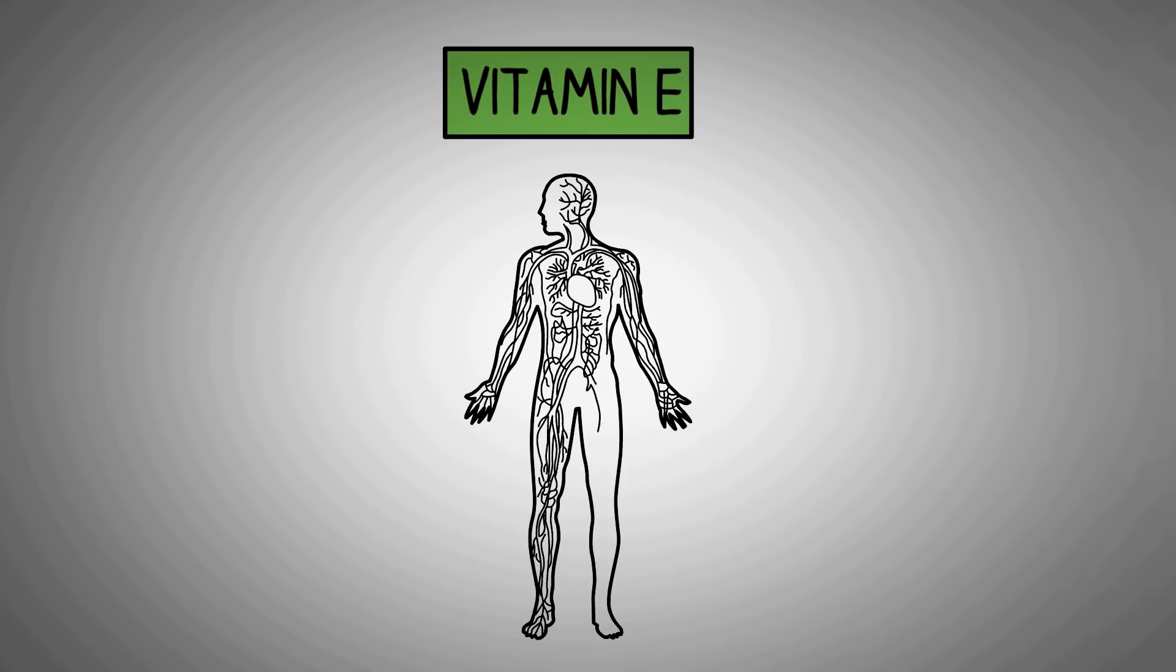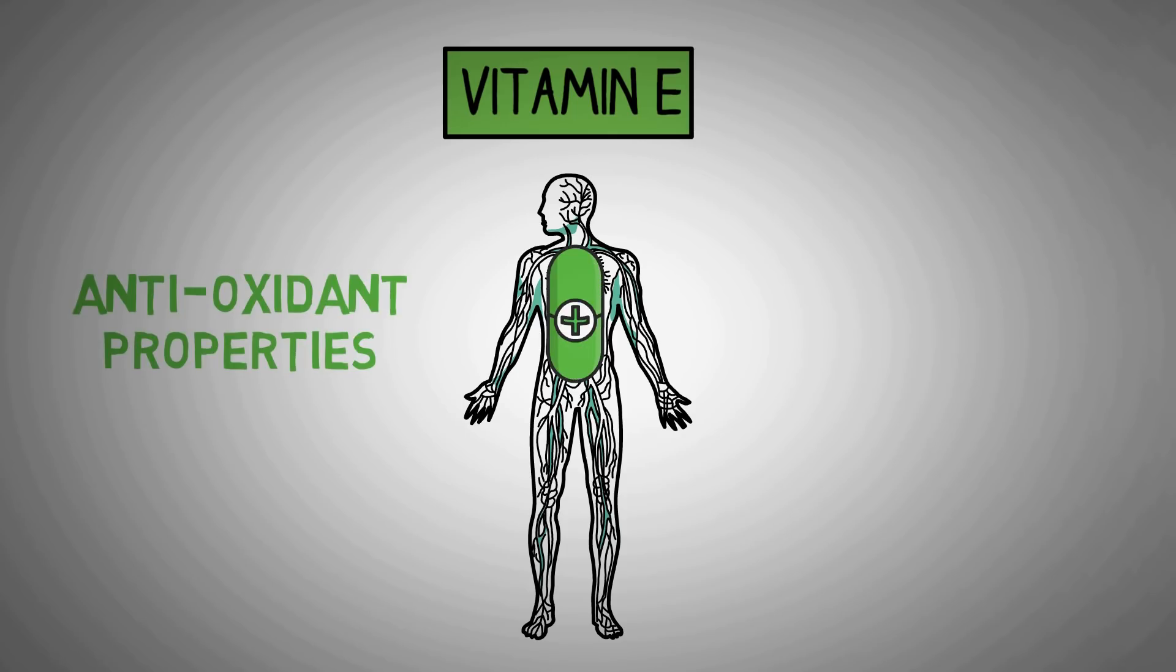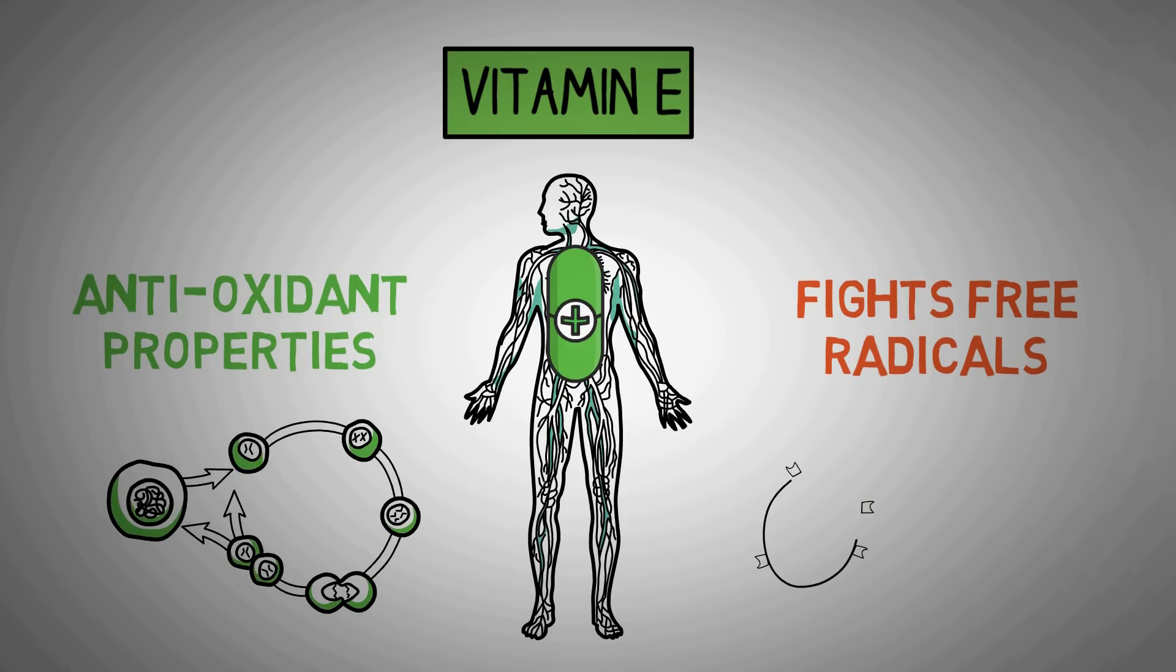Our next immune system boosting vitamin is vitamin E. Vitamin E helps the immune system because of its antioxidant properties. It helps fight free radicals and helps our cells to regenerate and work seamlessly.